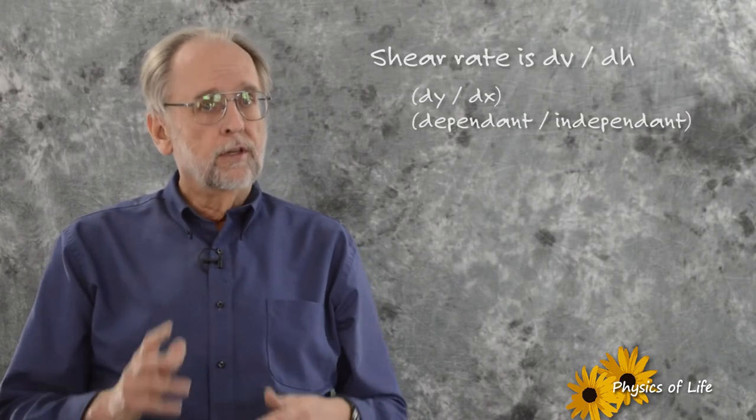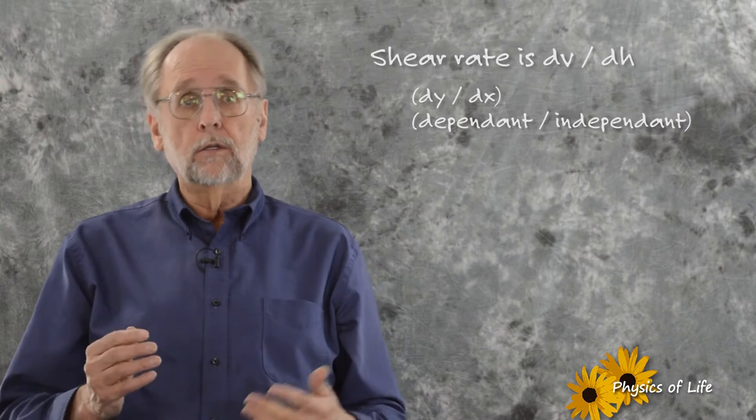There's something to note here that might help avoid confusion. The shear rate is dv over dh, that is, dx over dy. When you learned about first derivatives and tangents in calculus, you probably learned the first derivative as dy over dx.